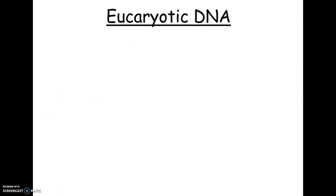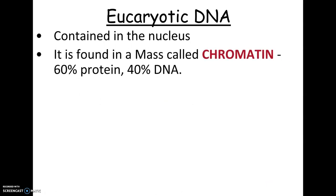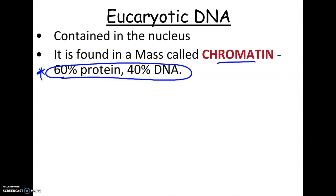Our focus in this chapter is mainly on eukaryotic DNA. Eukaryotic DNA is in the nucleus, in a mass called chromatin. Chromatin is 60% protein and 40% DNA. The word chromatin cannot be used for prokaryotic DNA — chromatin specifically refers to eukaryotic DNA made of DNA and protein. Remember, prokaryotic DNA was what we called naked DNA.